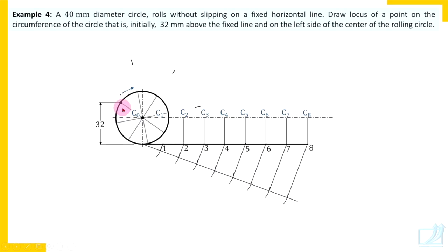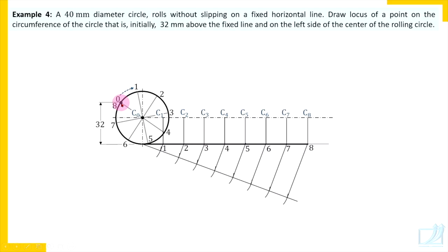Remember, with reference to the initial position as given in the problem, this is the zeroth position. Then first, second, third, fourth, fifth, sixth, and eighth position. In the very first problem we solved, the initial position was in contact with the ground. In the second problem, the initial position was the highest point. Now here, the initial position is 32 millimeters above the ground and on the left side of the center. So with reference to this initial position, mark eight points on the circumference of the circle.